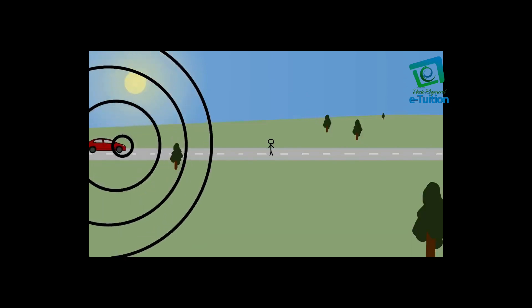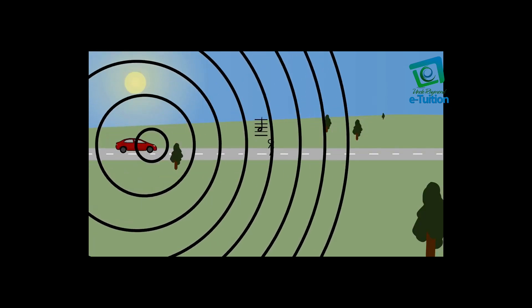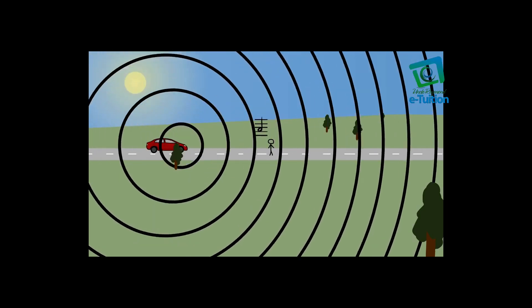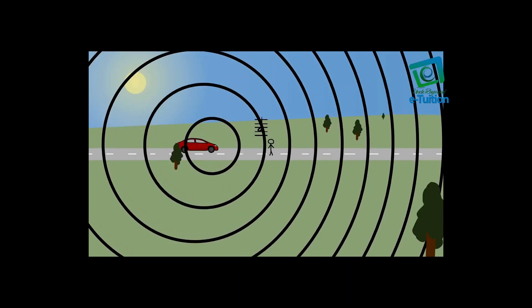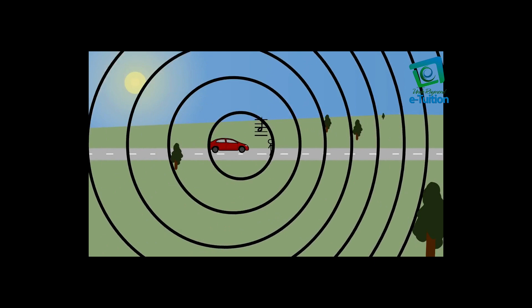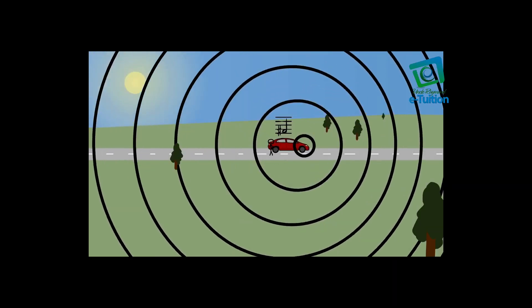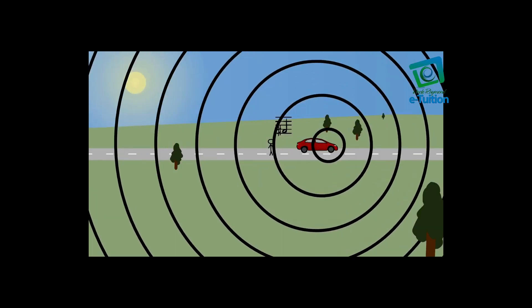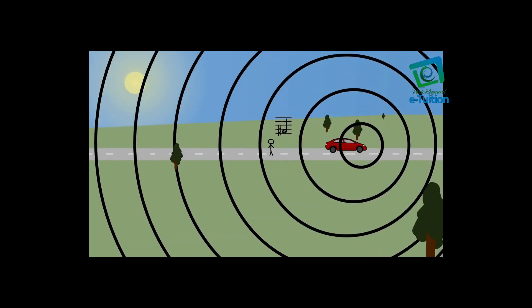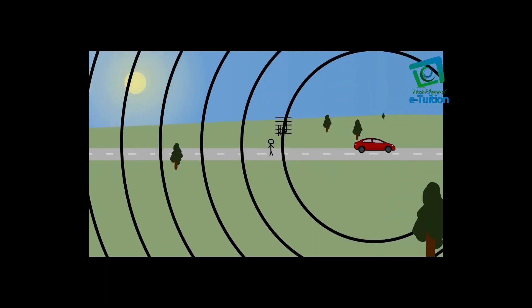As the vehicle is coming towards you, the sound waves that is emitting bunch up and so are delivered to you at a higher frequency, which you interpret as higher pitch. Because the frequency of sound waves is pitch. And then when the vehicle passes you and moving away from you, the sound wave spreads out. And so you hear them at lower frequency, a lower pitch.